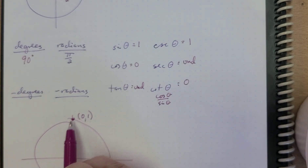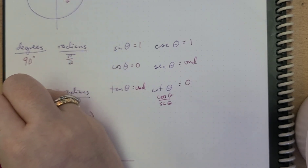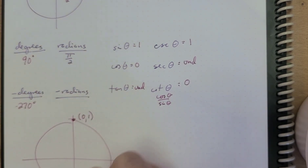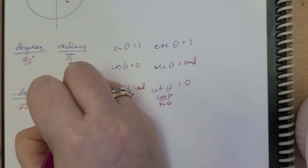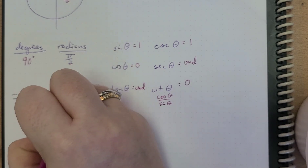For negative degrees we would have negative 270, and for negative radians we would have negative 3π/2.